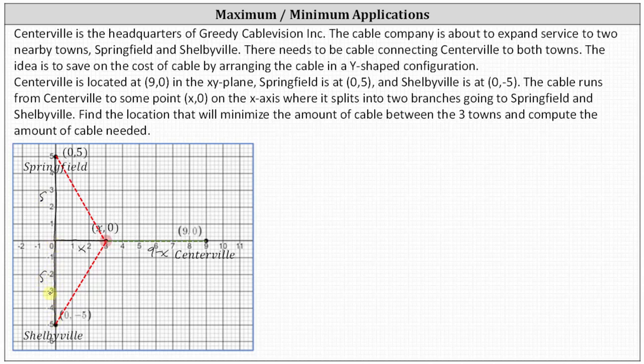The other leg in both right triangles has a length of 5 — we're not using negative 5 because we're thinking in terms of length. Using the Pythagorean theorem, C squared equals A squared plus B squared, or C equals the square root of A squared plus B squared. The lengths from the split point to each town are both equal to the square root of X squared plus 25, due to the Pythagorean theorem.